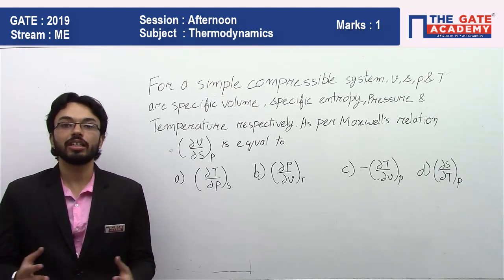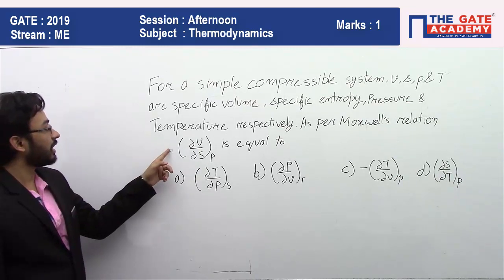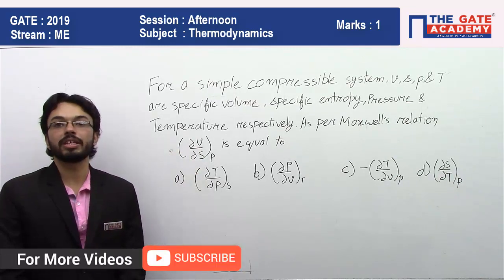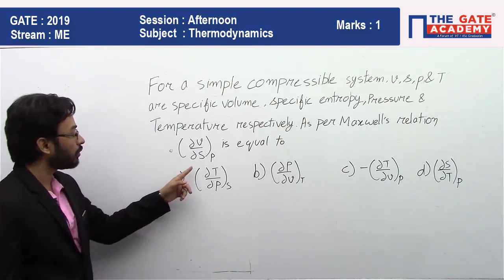So there is nothing much to explain. The formula is: del v by del s at constant P, that is del v by del s at constant pressure, will be equal to del T by del P at constant entropy.